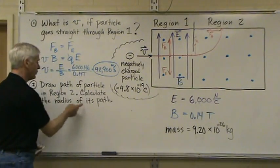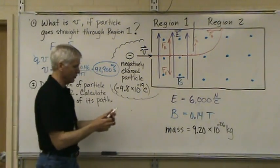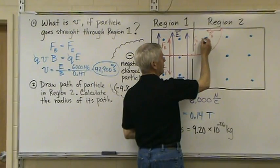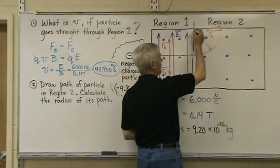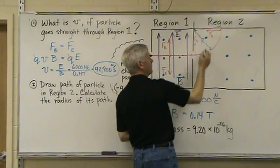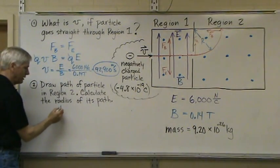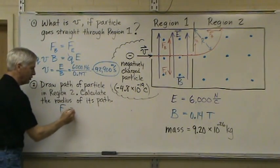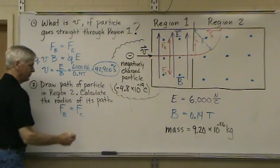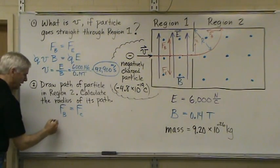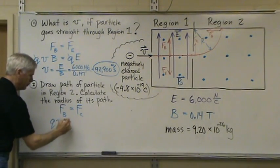So, we need to find the radius of that path that it's going to follow. So, we want to find what R is. We'll call that the center there. Like we said, the magnetic force equals the centripetal force in that case. They're one and the same. We know this is QVB.